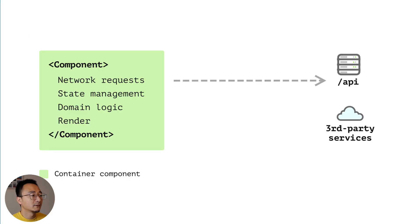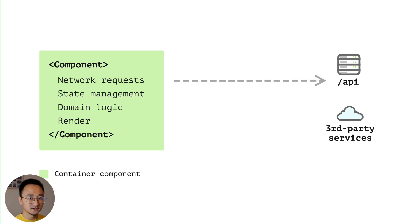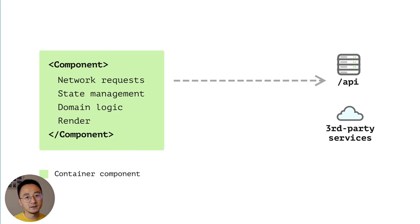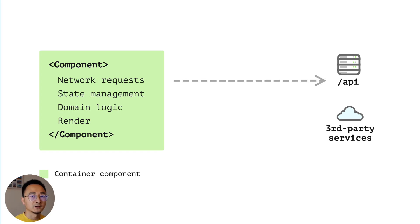The first one is the single component architecture. This single component handles the network request, state management, domain logic, and rendering logic all within itself. A good example of this kind of application is a form for collecting survey data or feedback. It's very simple — roughly just HTML — but in some parts of the application you want dynamic behavior, like fetching data dynamically to generate a code snippet on the page, and React can address that.